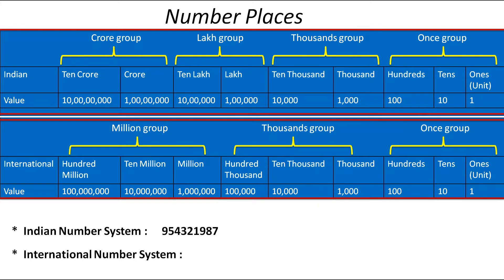See how it looks. This way. Here, the digits 9, 8 and 7 fall in the group of 1s. Then 2 and 1 fall in the group of thousands. This comes in the lakh group and this comes in the crore group. So the number name becomes 9,54,32,1,987. This is easy, right?